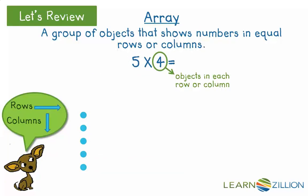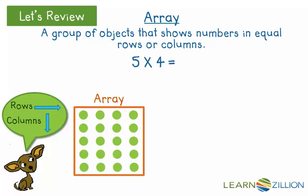Now, we'll look at the 4. We'll draw 4 objects in each row. Drawing 1, 2, 3, 4 in each of our five rows. This is a picture of an array.